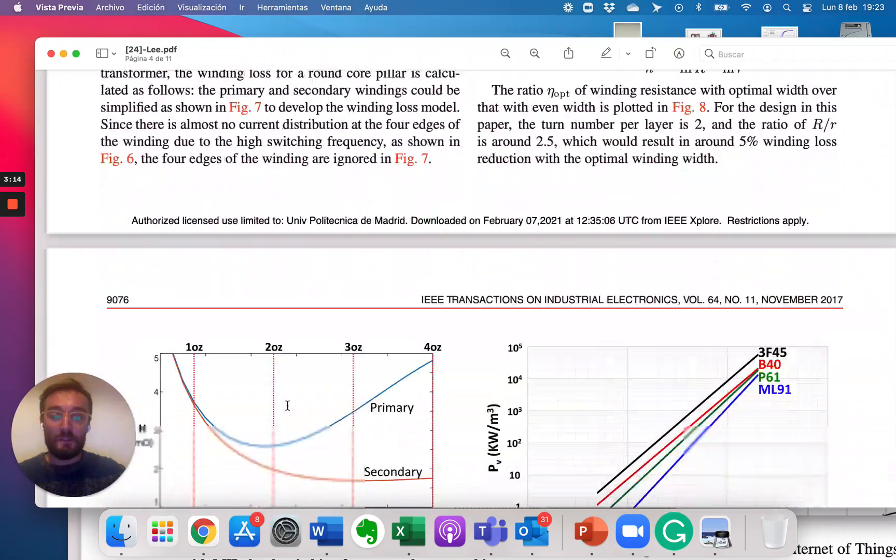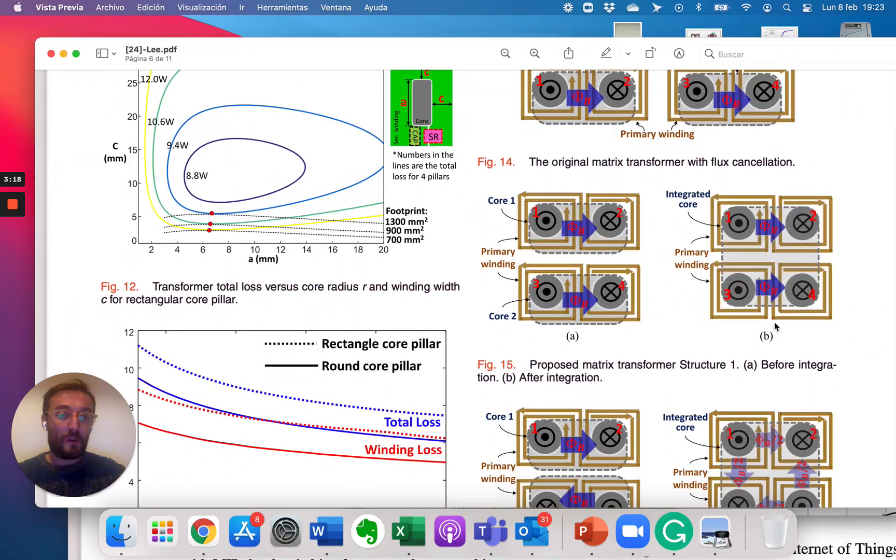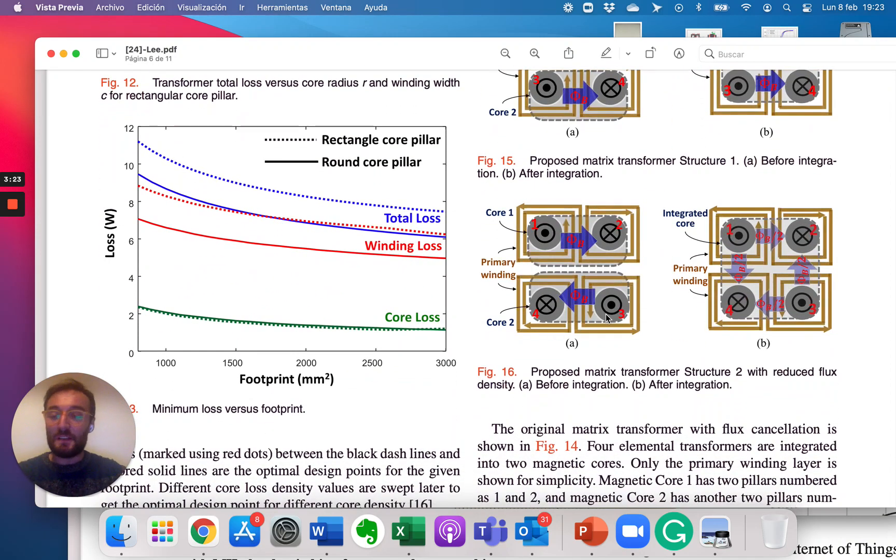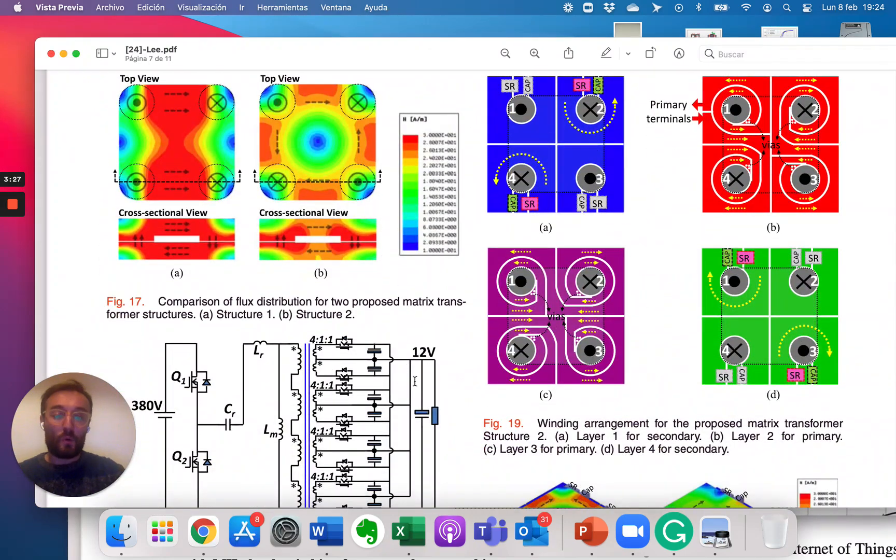Here you will see these four legs doing this kind of square where they are able to cancel the flux in the middle and reducing the core losses.